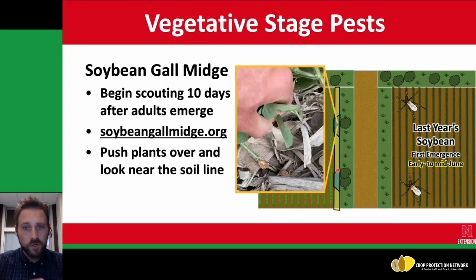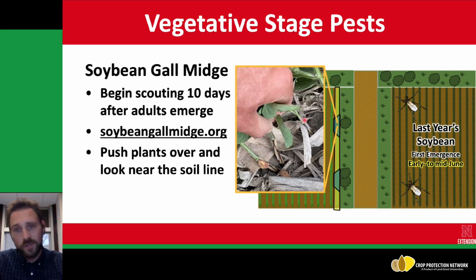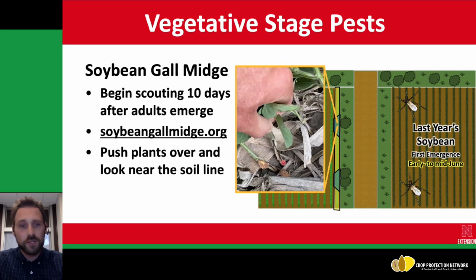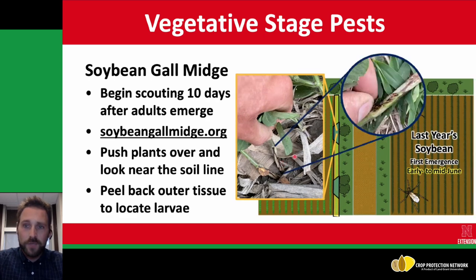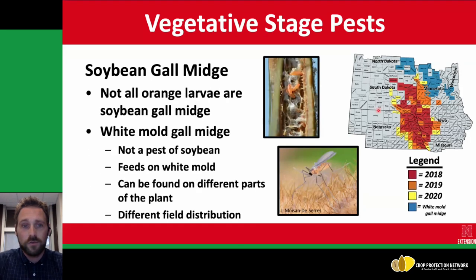In those areas, you can push over plants to get an exposure below the cotyledonary node, looking for dark discoloration. You want to pull up plants that show those signs and peel back the tissue underneath to see if you can locate the orange larvae. If you locate them and you're in a county that's not been documented, contact us for documenting those counties as infested.